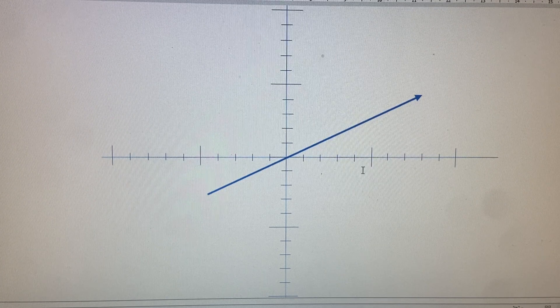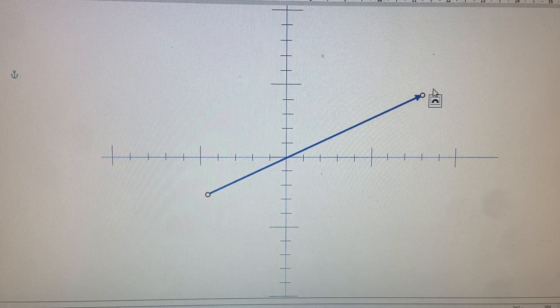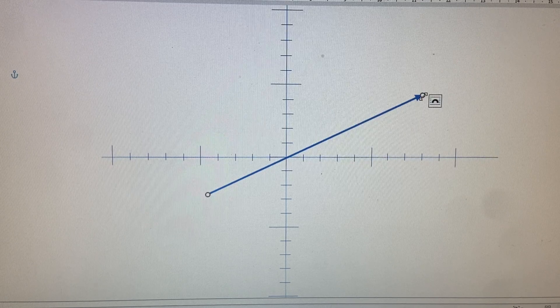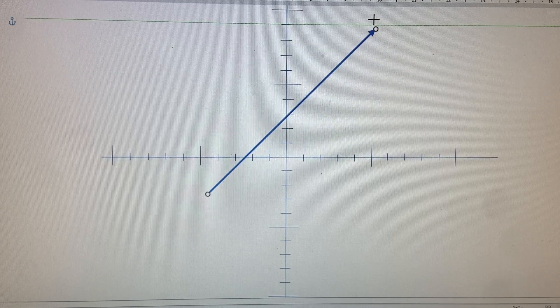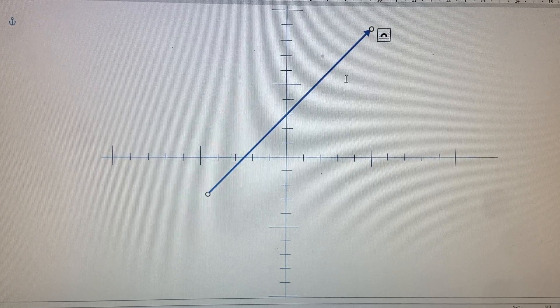And the same force vectors can be on a coordinate plane with number lines horizontally and vertically. And these force vectors can be pointing anywhere. They don't have to go through the zero there. They can be anywhere.